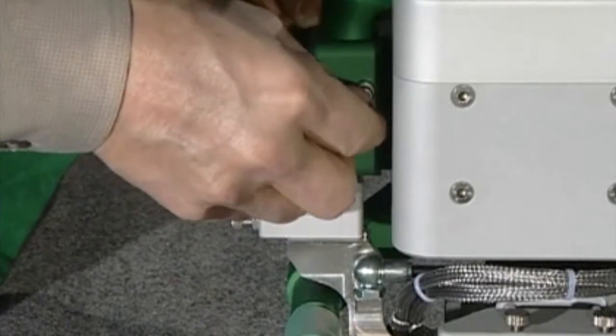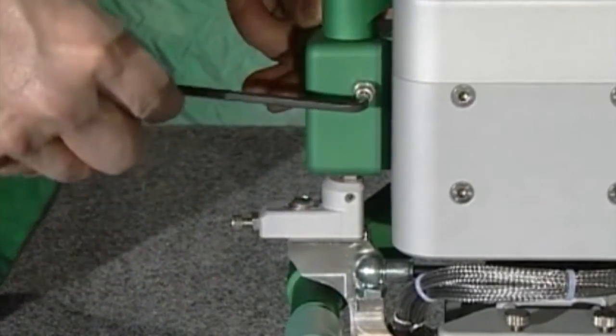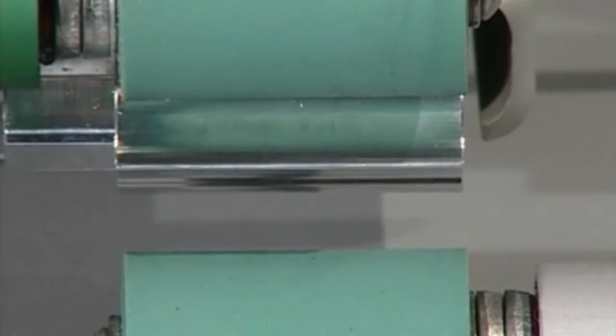Use the hex wrench to turn the adjustment screw one direction or the other and observe the movement of the wedge.